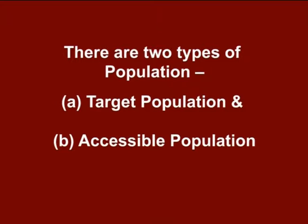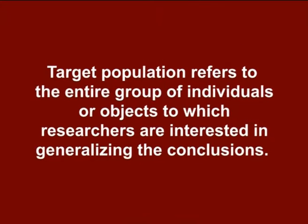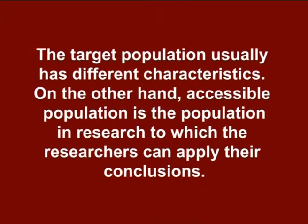There are two types of population. The first one is target population and the second one is accessible population. Target population refers to the entire group of individuals or objects to which researchers are interested in generalizing the conclusions. The target population usually has different characteristics. On the other hand, accessible population is the population in research to which the researchers can apply their conclusions. This population is a subset of the target population and is also known as the study population.